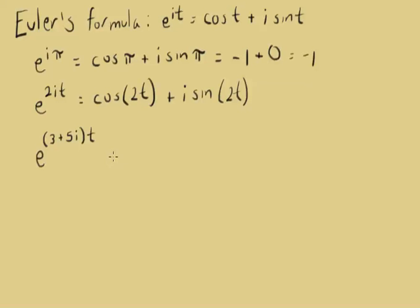All right, we want to do a little bit of rewriting here. We'd like to rewrite this as e to the 3t plus 5i t. And then, once we've done that, we want to rewrite this as e to the 3t times e to the 5i t.